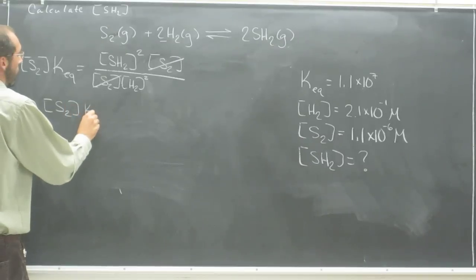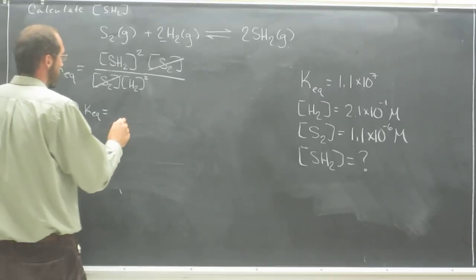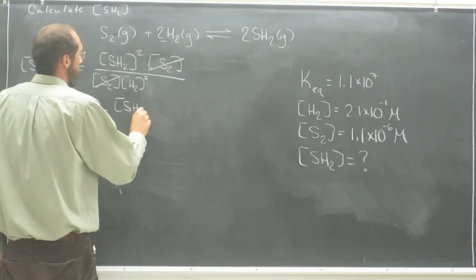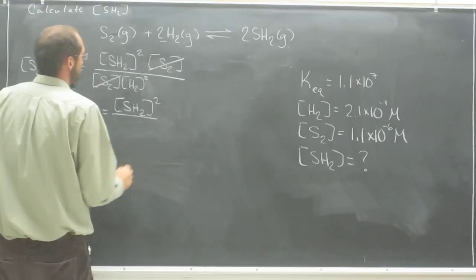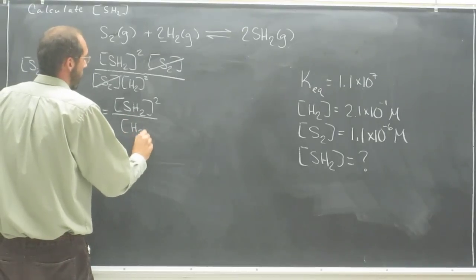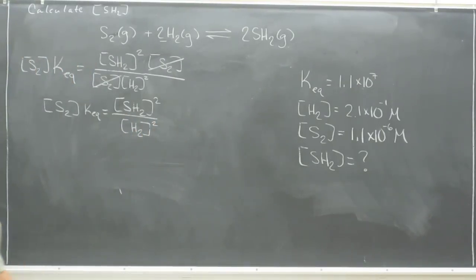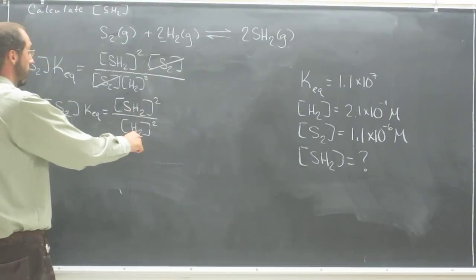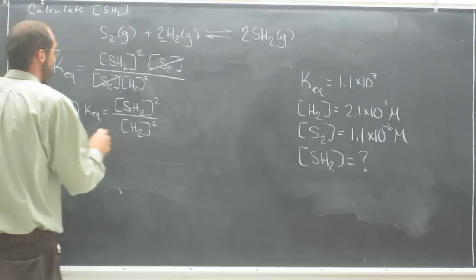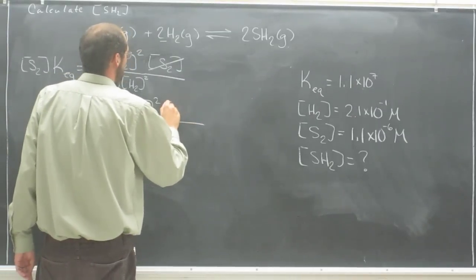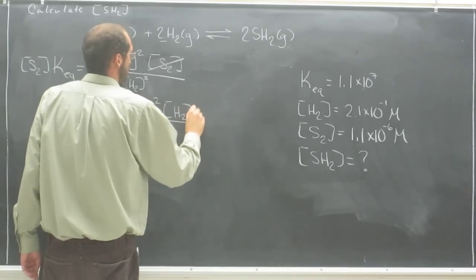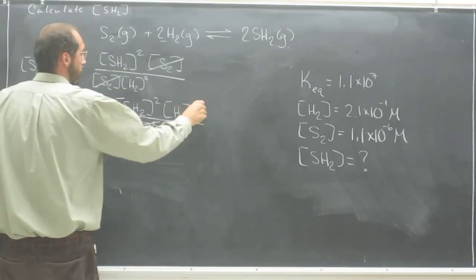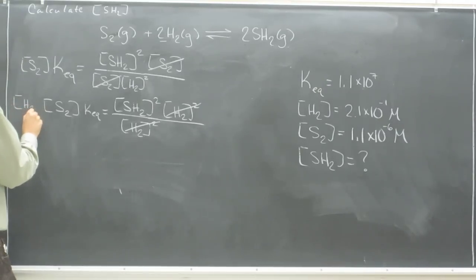Now what we could do is to get rid of H2 squared, multiply both sides by H2 squared. So H2 squared will cancel out with H2 squared, and we get that expression in there.